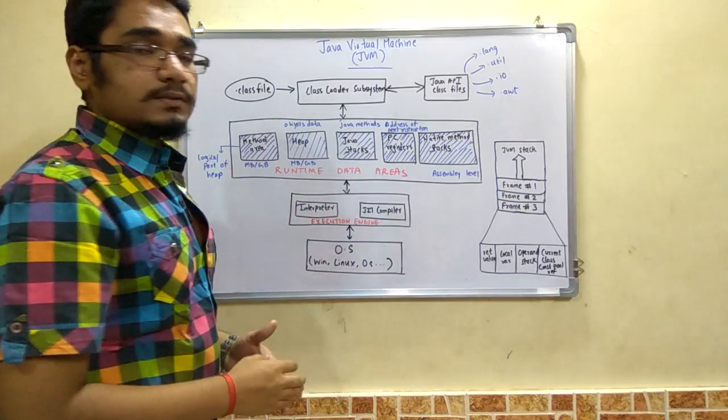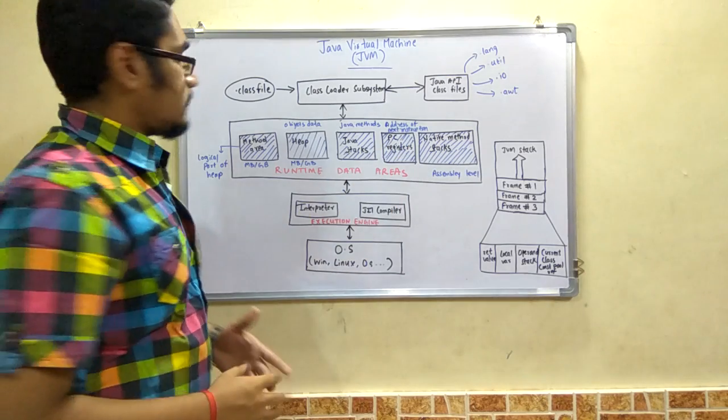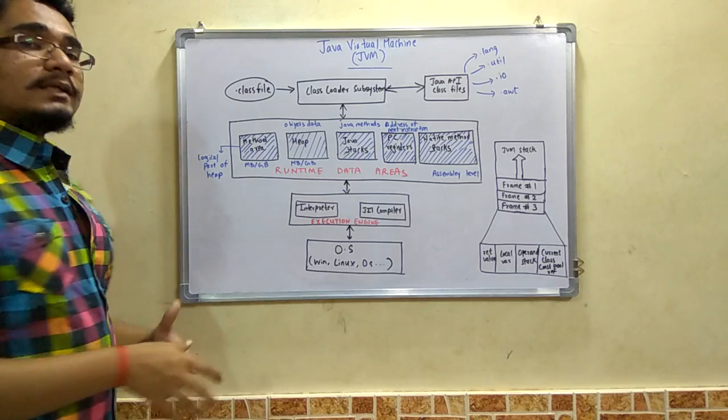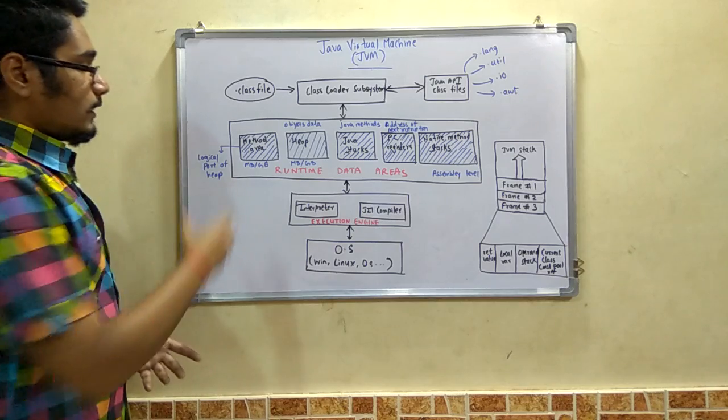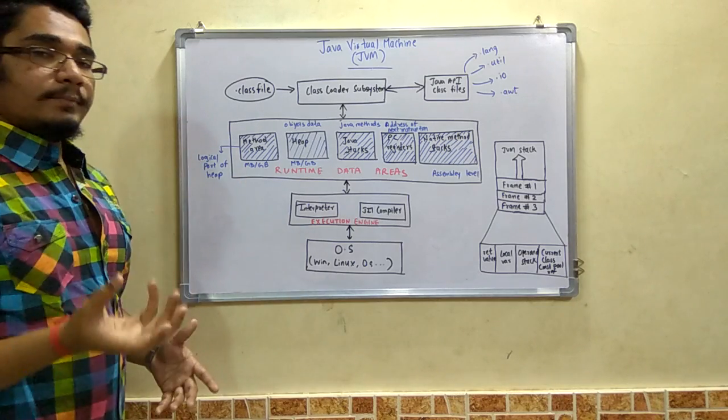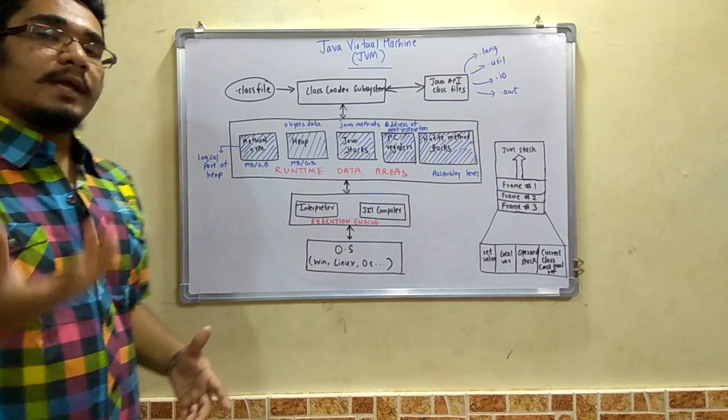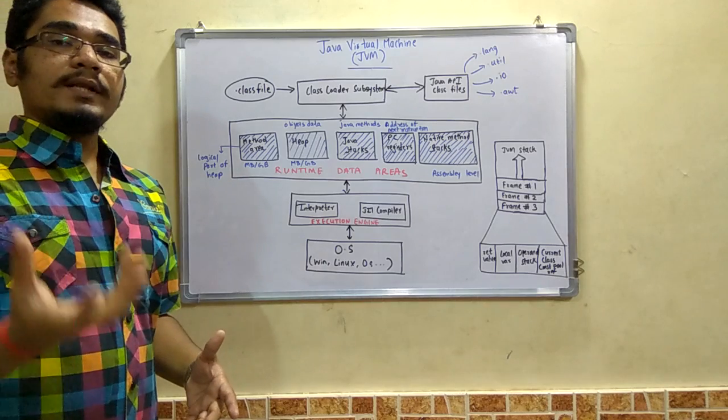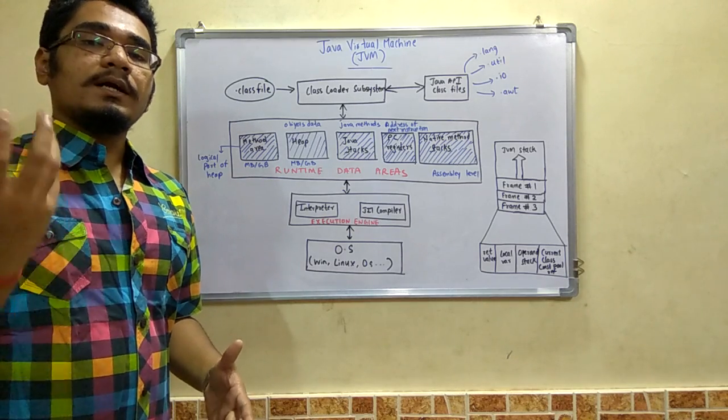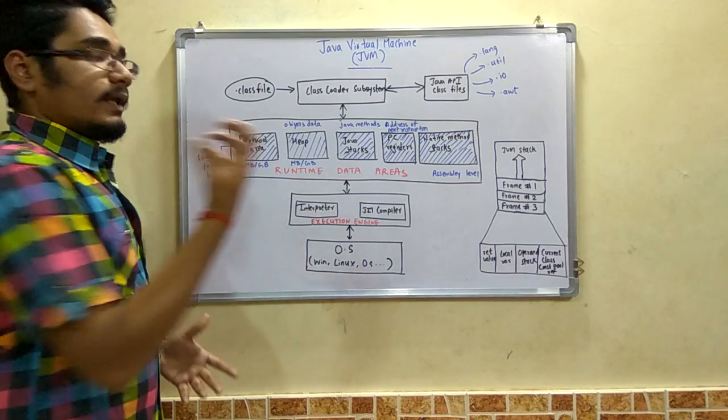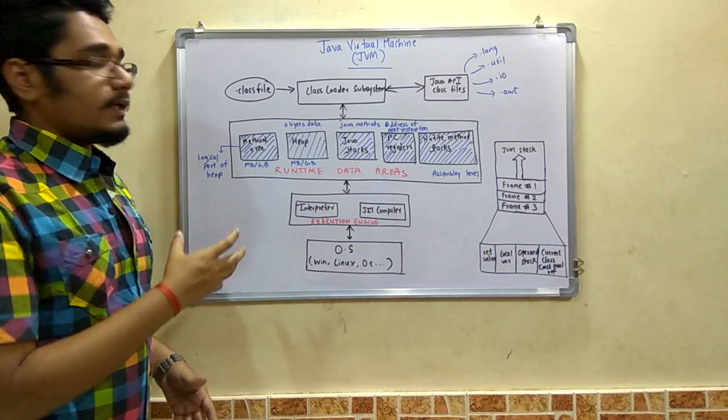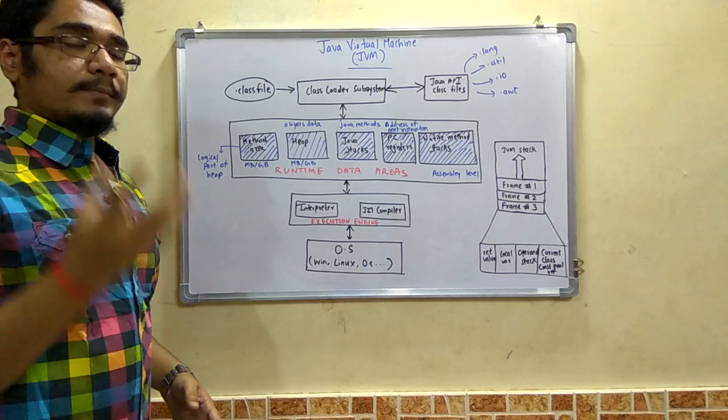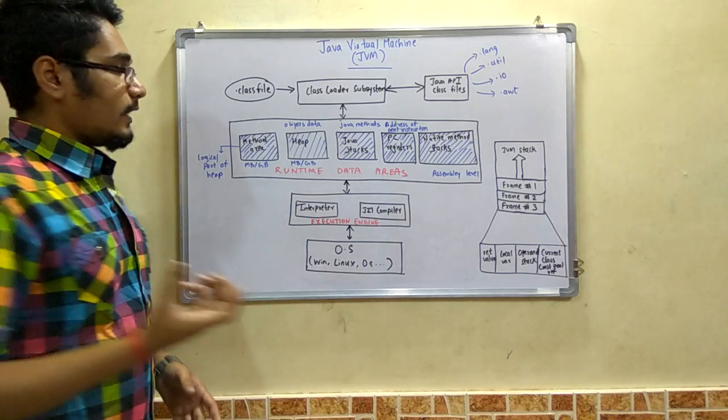So let's start with the method area. Method area is nothing but a logical part of the heap. Now this method area is of MB or GB or it may sometimes be in kilobytes also. This method area comprises of the various code of the classes, the variables, the data, the methods, or any other code related data are stored in this method area. And this method area is stored per JVM - means for per JVM you have one method area.